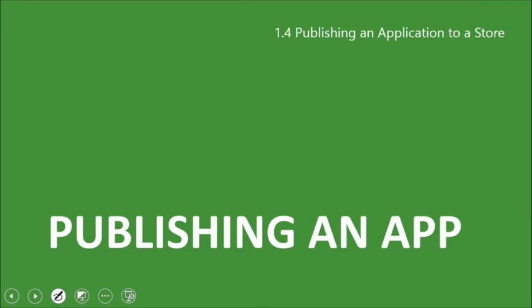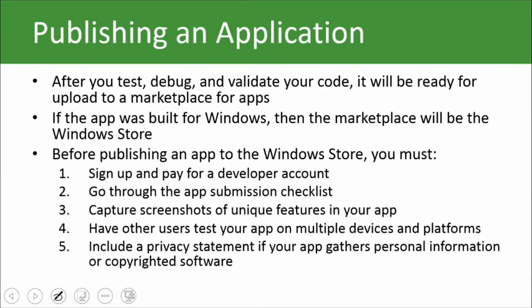Now this is the last step, ladies and gentlemen. Publishing an app. So you've gone through all this hard work of creating and developing an application. You've got to know how to publish it and where to go. There are just some really simple steps if you want to publish it to a marketplace for apps. For example, the Windows Store. Before publishing an app to the Windows Store, you must sign up and pay for a developer account. Paying is always kind of a bummer, but just remember how much money you can make when people download your apps. Two, you've got to go through the app submission checklist to make sure that you've dotted all I's and crossed all T's. Three, you've got to capture some screenshots of unique features in your app, different things that you want people to take notice of. Four, you have other users test your app on multiple devices and platforms. Exceptionally important. And finally, five, a little bit of paperwork. You've got to include a privacy statement if your app gathers personal information or uses copyrighted software.